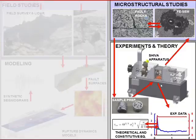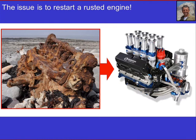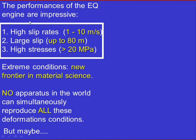The issue is to make this old engine work in the lab, which is not easy because the performances of the earthquake engine are impressive: slip rates up to 10 meters per second, slip as large as 80 meters (from the Japanese 9.0 earthquake), and stresses easily larger than 20 megapascals at nucleation depth. These conditions are pretty extreme — a new frontier in materials science. There is no single machine that can simultaneously impose all these conditions on a piece of rock.